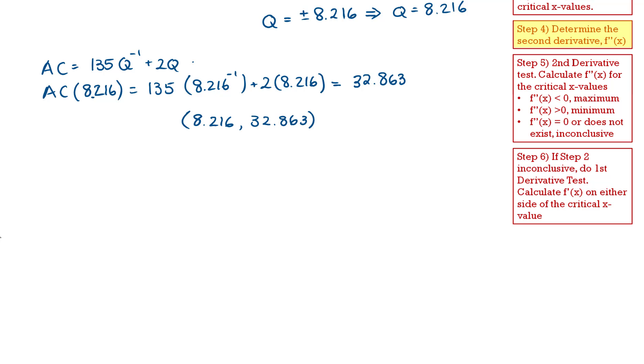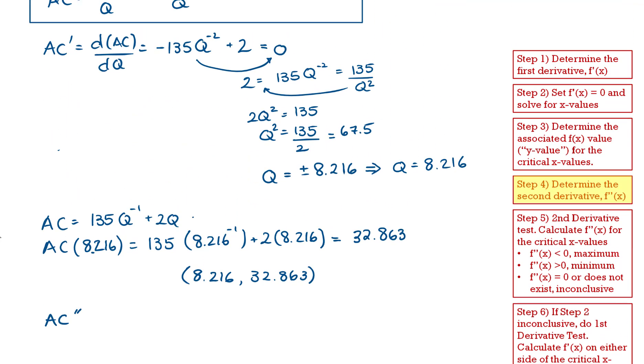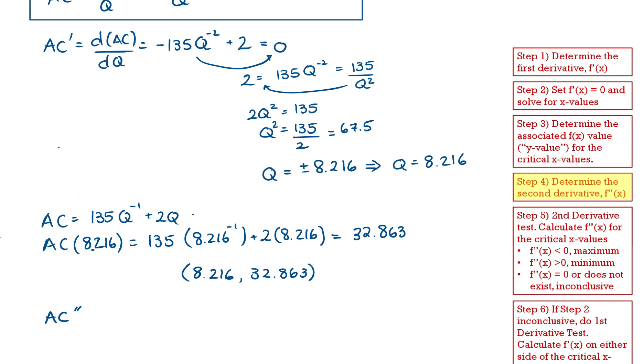The next step is going to be to determine the second derivative of our average cost, AC double prime. So this is going to be the derivative of my first derivative, which I have right here.